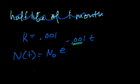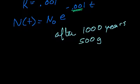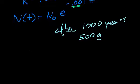But let's say this is the formula. And let's say that after, I don't know, let's say after 1,000 years, I have 500 grams of whatever element is described, the decay formula for whatever element is described by this formula. How much did I start off with? So how much did I start off with? So essentially I need to figure out n sub 0.